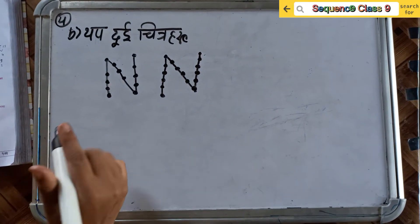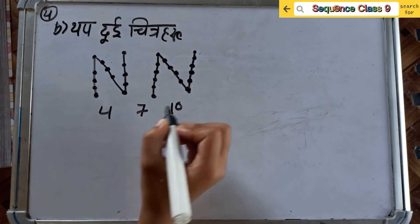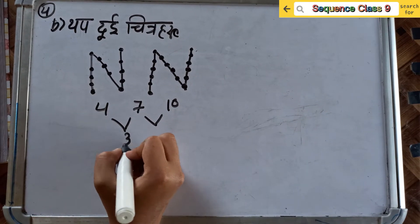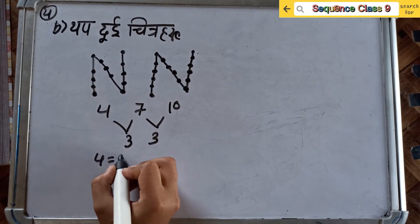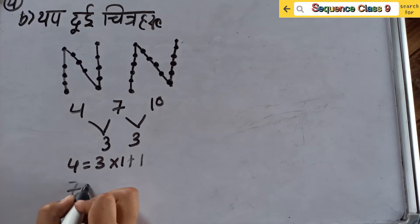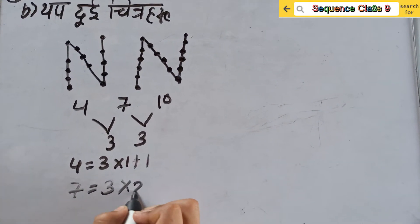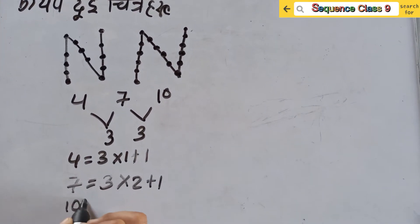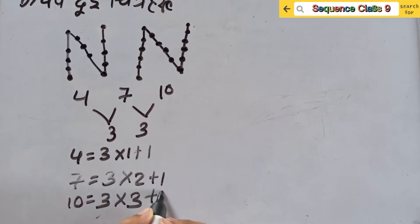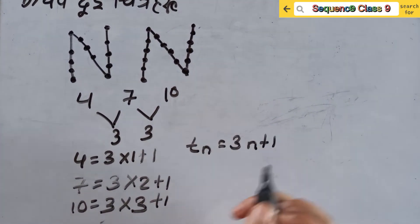Now I'm clear: the sequence is 4, 7, 10. 4 is equal to 3 into 1 plus 1. 7 is equal to 3 into 2 plus 1. 10 is equal to 3 into 3 plus 1. So T_n is equal to 3n plus 1.